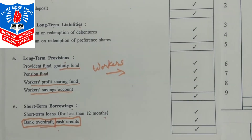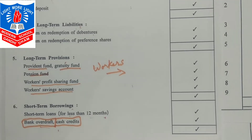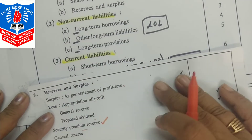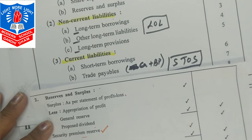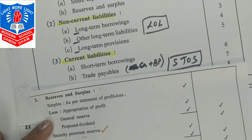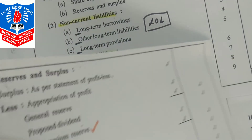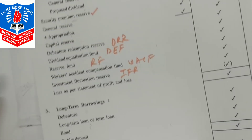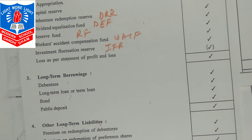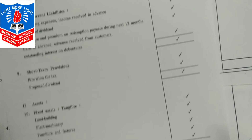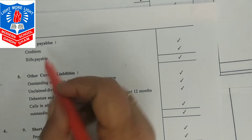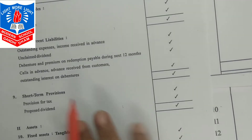Next in sequence is trade payables. Trade payables include creditors and bills payable. Creditors and bills payable come under this category.